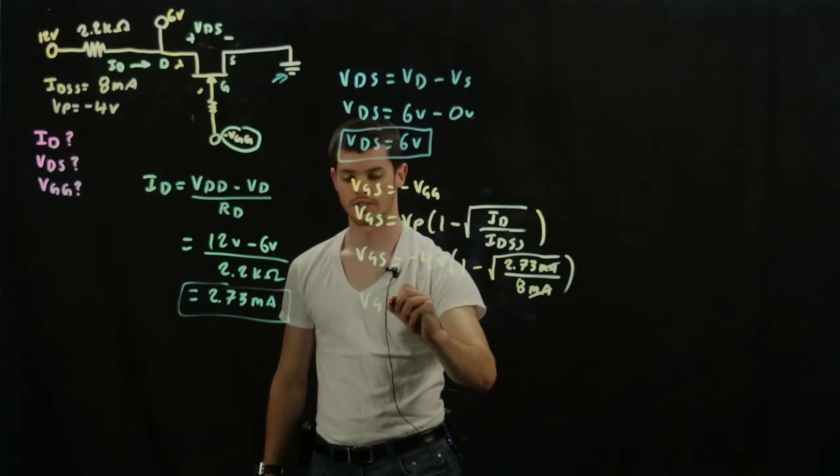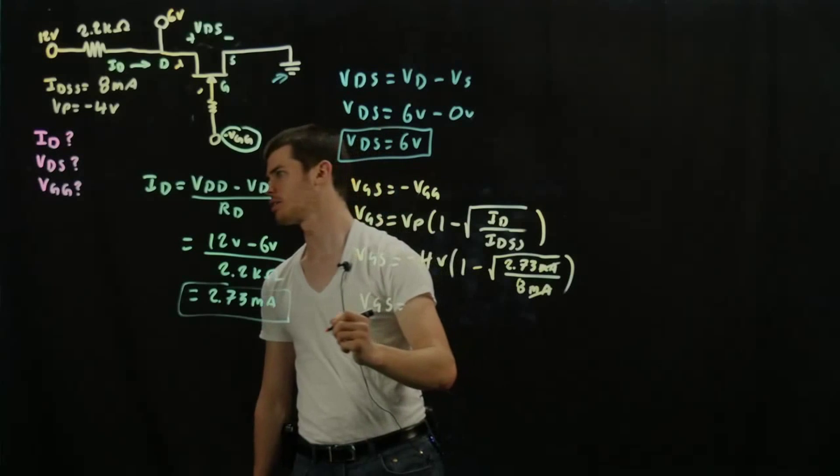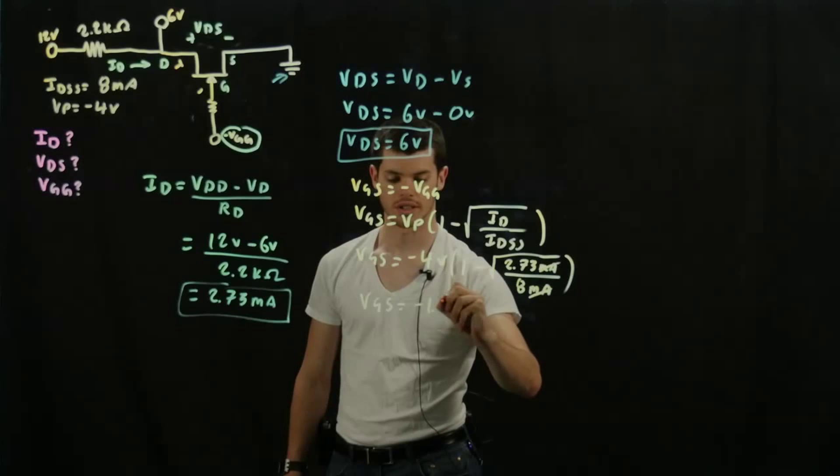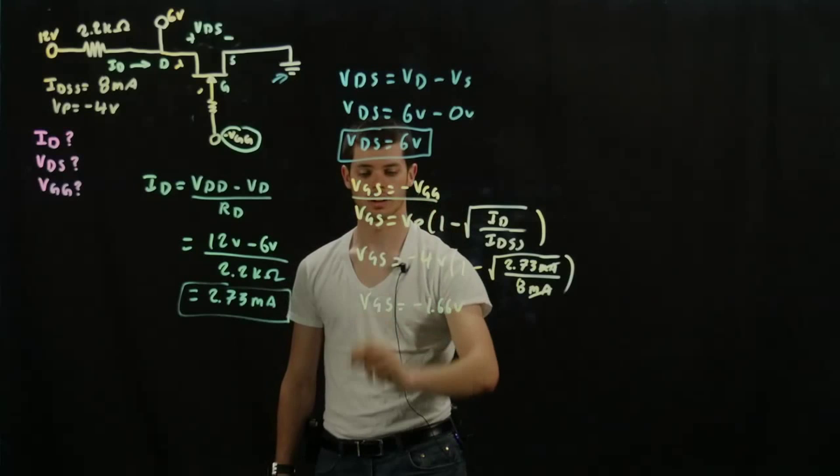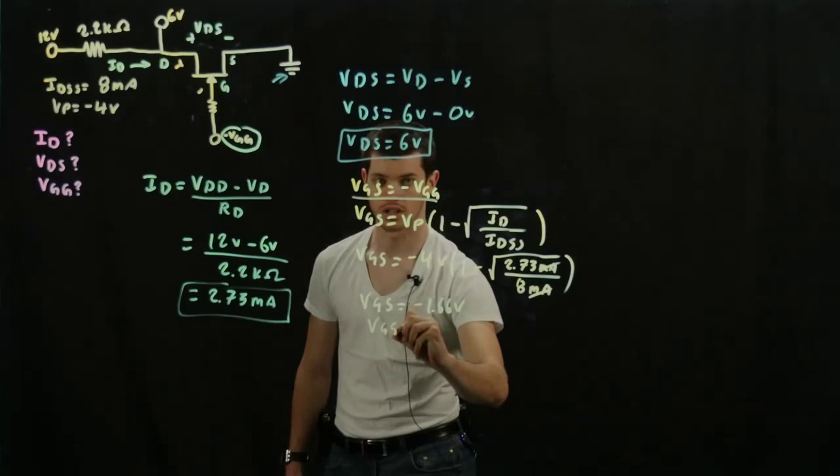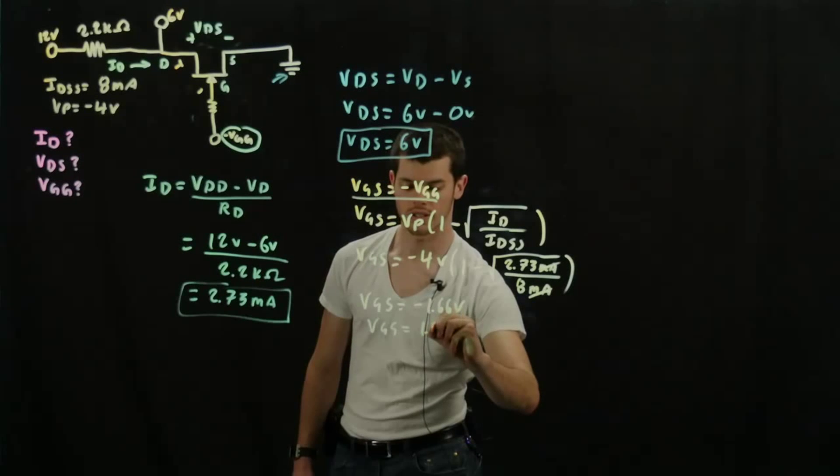So when you go ahead and solve this out, you should get a VGS of around negative 1.66 volts. And based on this relation we saw before, we can deduce that VGG is equal to 1.66 volts.